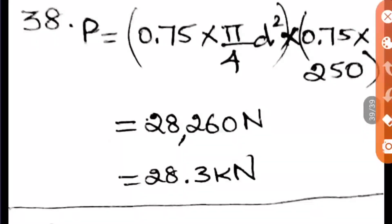To find the pull, we multiply the area by the strength (250 MPa). Since it's 0.75 times the shank dia, multiply 0.75 with the area. As it's a bearing base, multiply 0.75 with the stress also: 0.75 × (π/4) × D² where D is 16 mm, times 0.75 × 250 = 28,260 N = 28.3 kN. Option B is the right answer.